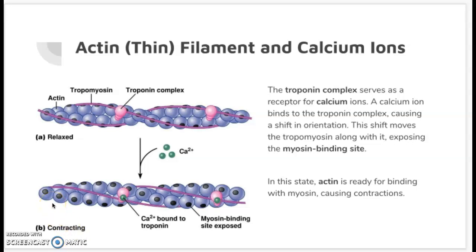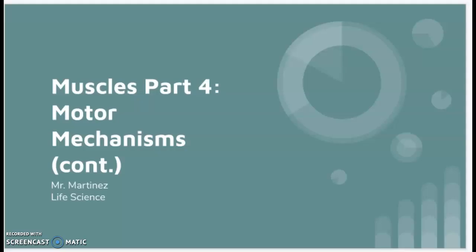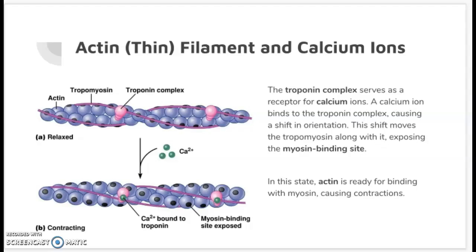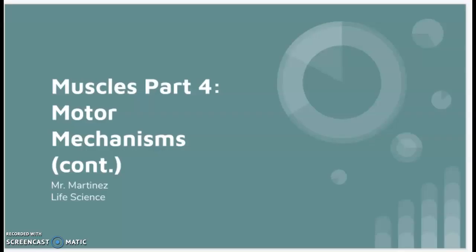Hi everyone, this is Freddy Martinez and we are going to continue our lesson about muscle parts and the motor mechanisms. Last time we were talking about the actin filaments, also called the thin filaments, and how calcium ions play a role in binding and exposing the myosin binding sites. If you need to go back and look at the prior video, please do so to refresh your memory — otherwise, let's continue.